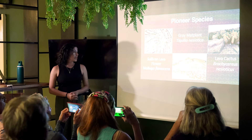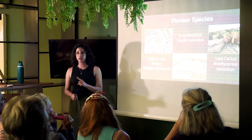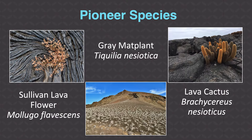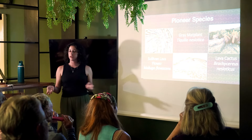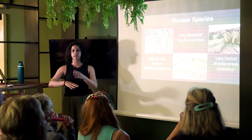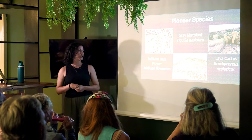There are three pioneer species to note. Two have been seen so far: the solovan flower and the gray mat plant are in the lower dry lowland ecosystems. The lava cactus, Brachycereus nesioticus, is less likely to be seen. The gray mat plant and solovan flower come into the rock formation and begin to break down the rocks into more fertile soil so that more complex plants can move in.